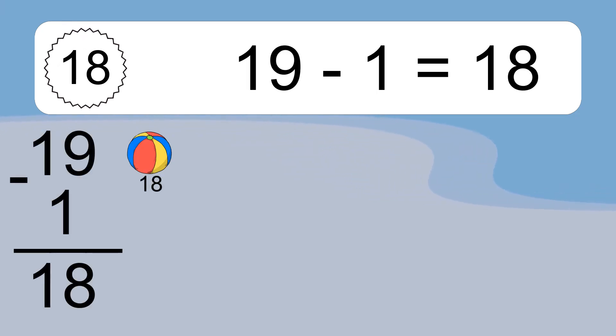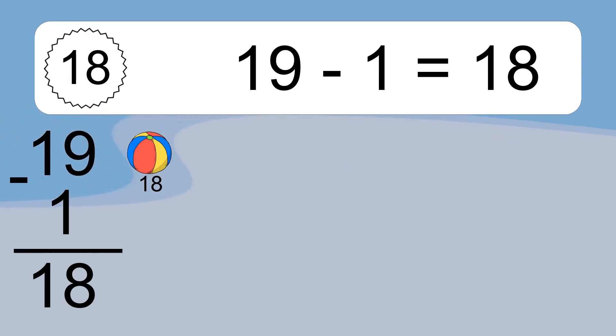19 minus 1 equals what? 19 minus 1 equals 18. Let's count it: 18.